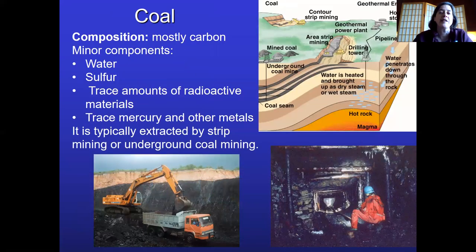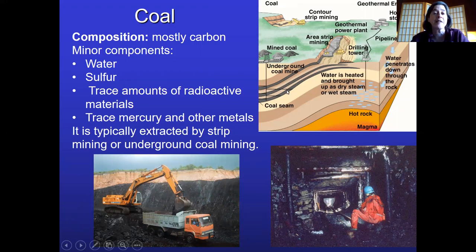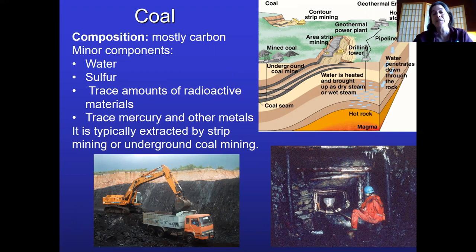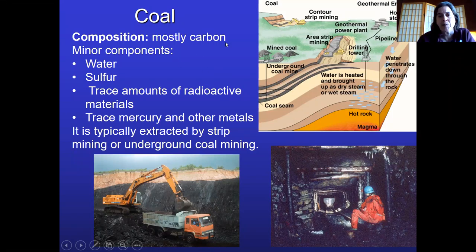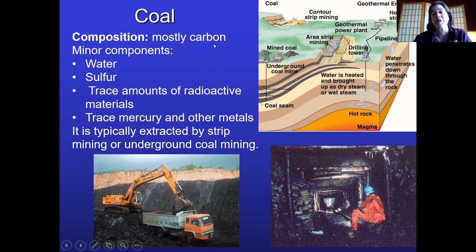Coal, just like other fossil fuels, is found in layers within the earth — only this time it's a rock instead of a fluid. So if you're going to find coal, it's a little bit harder to discover if it's underground. It's made up of mostly carbon; if it were perfect coal, anthracite comes the closest, it would be 100% carbon. But unfortunately, coal has other things in it too.